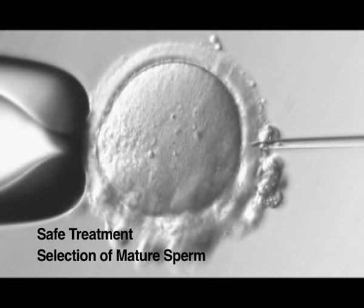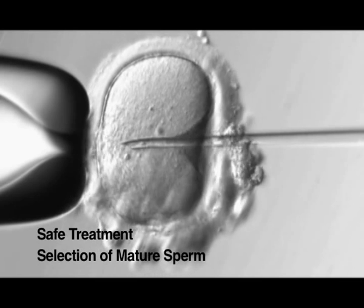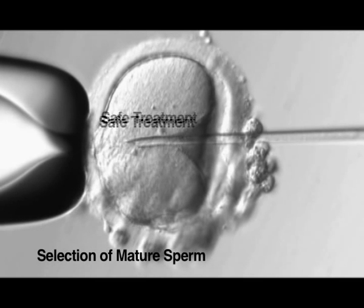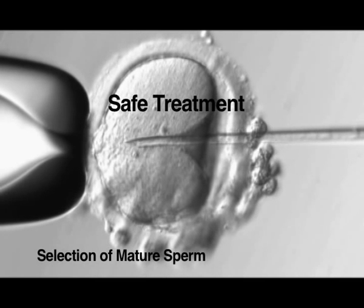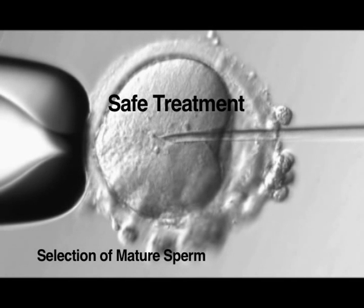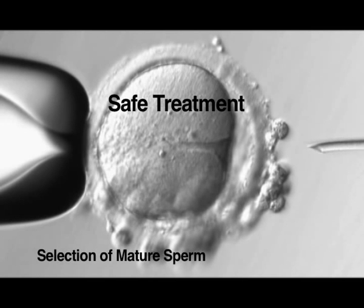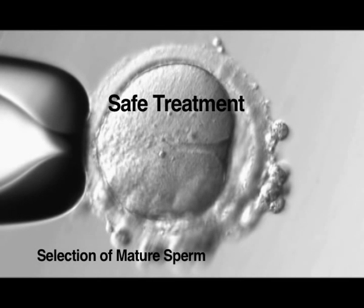Two main features distinguish SpermSlow from polyvinyl pyrolidone PVP. SpermSlow contains hyaluronan, which is a natural component of the oocyte cumulus complex and is completely biodegradable by the oocyte.